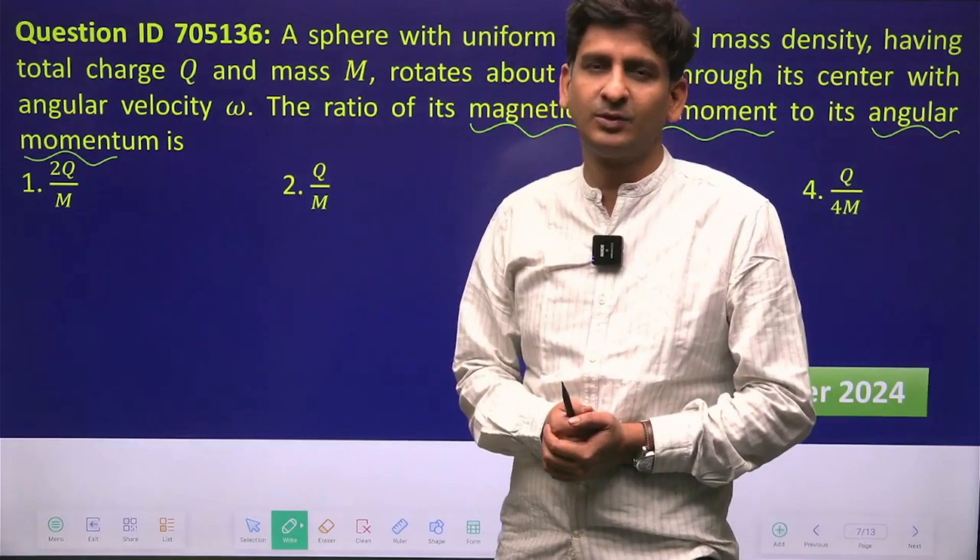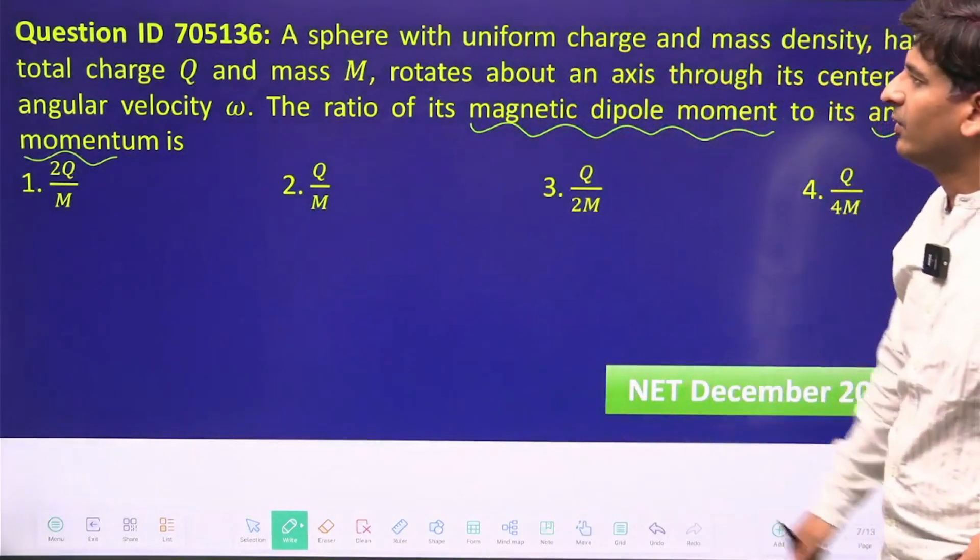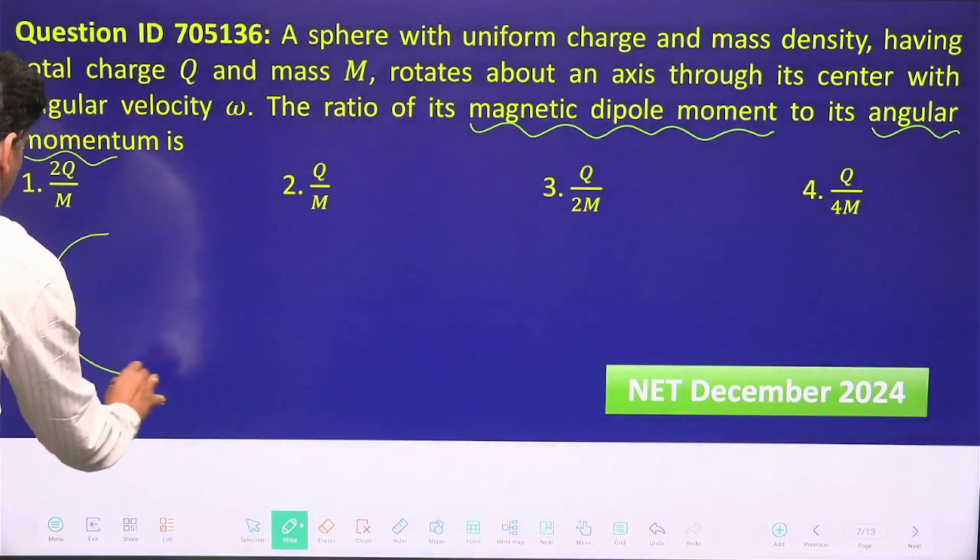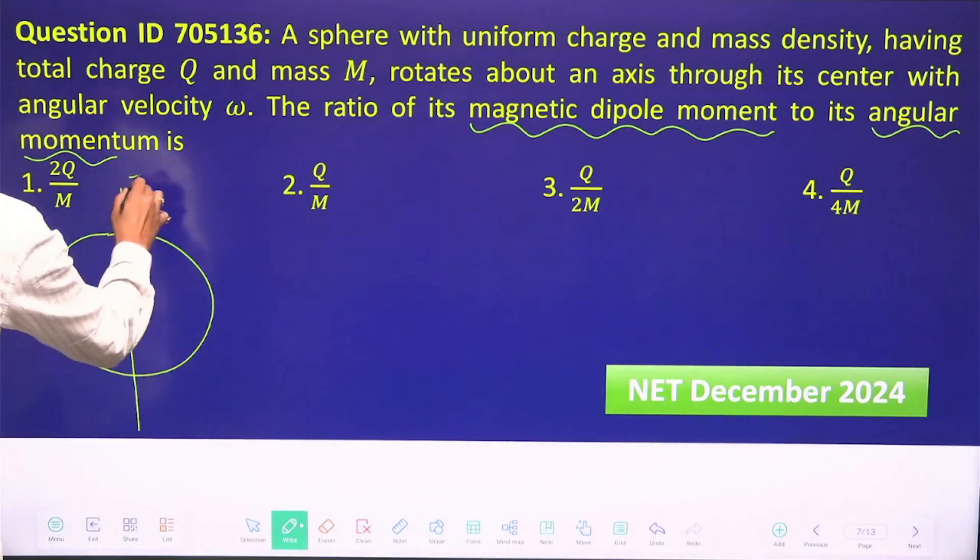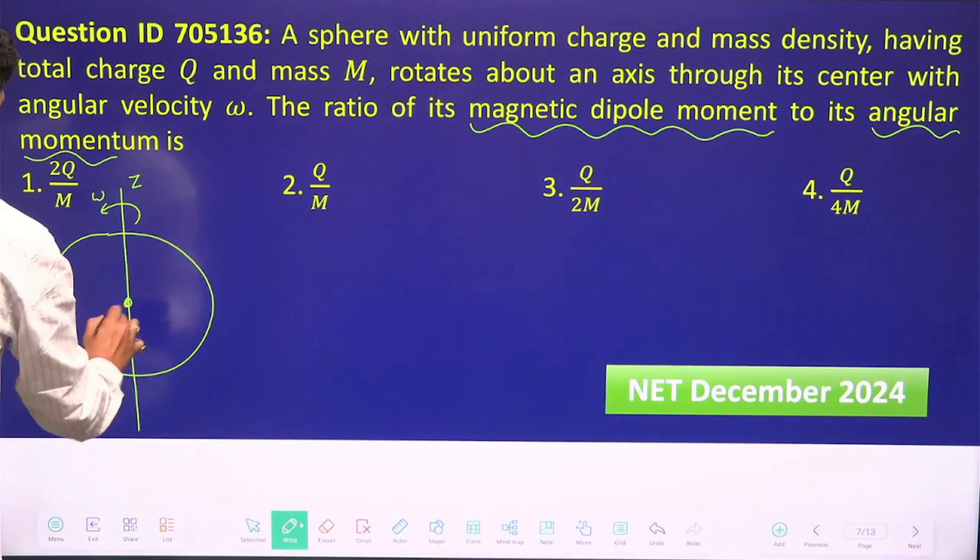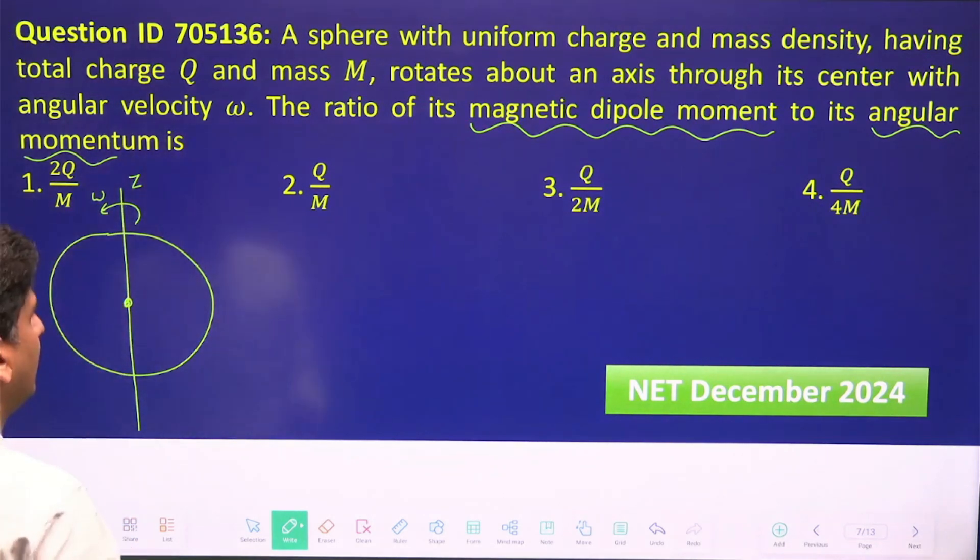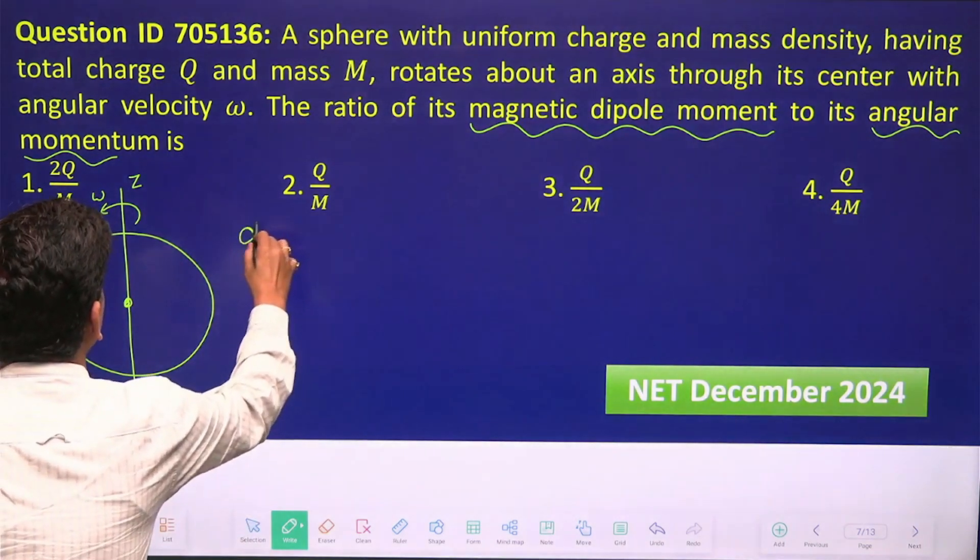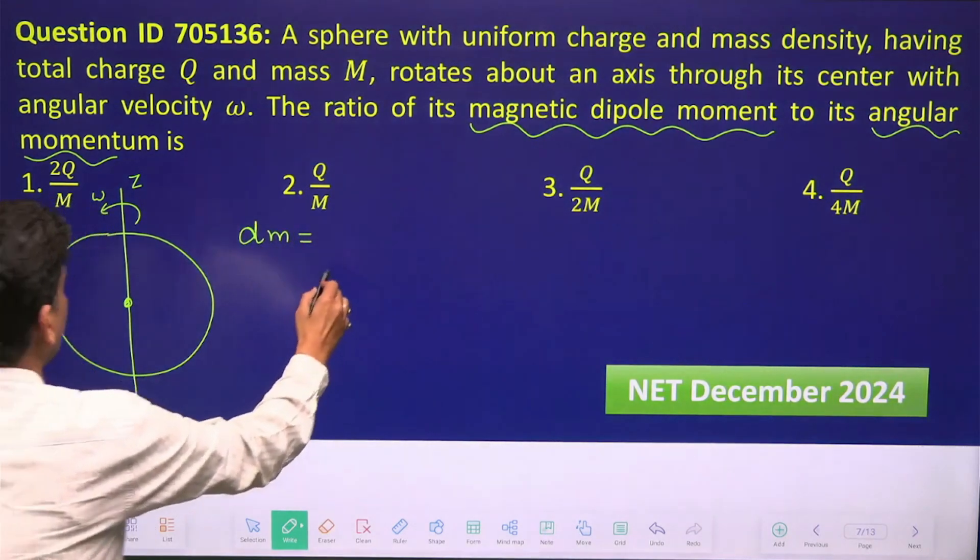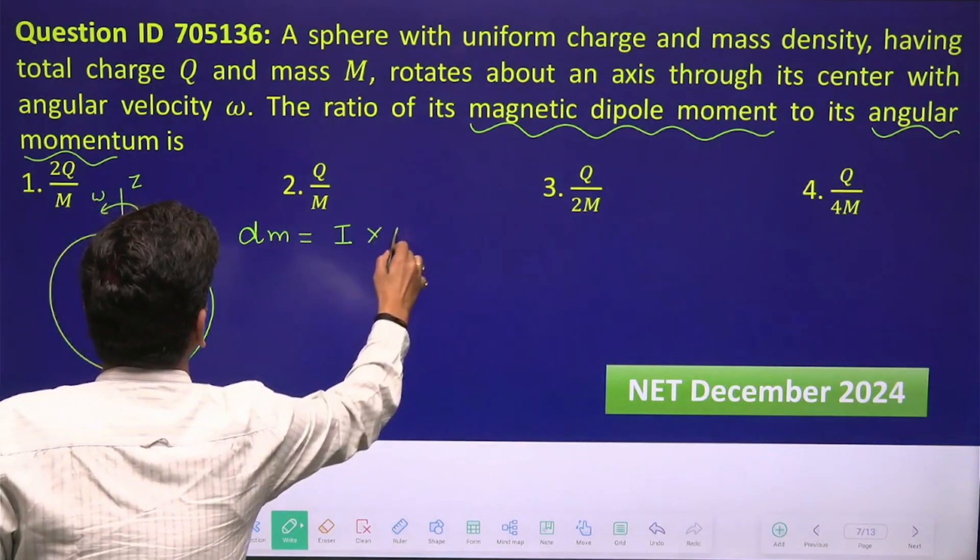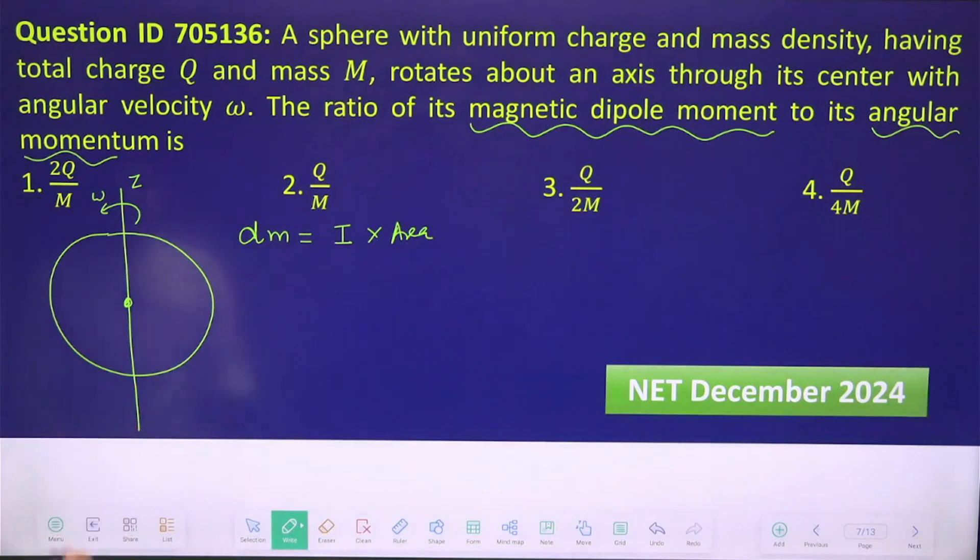Let us check out: if I have a solid sphere, suppose this is solid sphere, and let us take the Z axis and it is spinning like this, and I have to calculate the magnetic dipole moment. Magnetic dipole moment, let us take first a small magnetic dipole moment. It will be given by current into the area, the area where the charge is revolving.